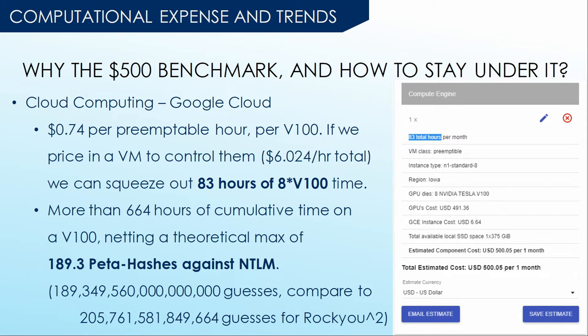If you're an attacker planning a series of short-running attacks instead of waiting 68 hours, why not just spin up 68 instances and get the results in one hour? Google Cloud actually appears to be cheaper — you can get 83 hours on an instance with eight V100 GPUs, bringing us to a terrifying theoretical max of 189.3 petahashes of NTLM we can guess. Not mega, not giga, not tera — peta. 189 quadrillion.